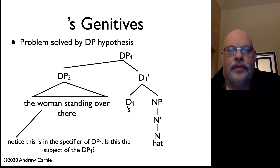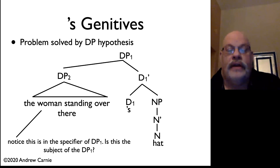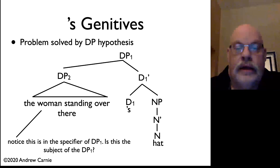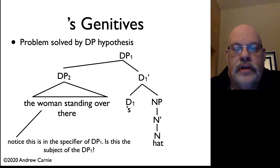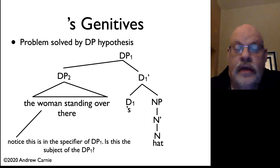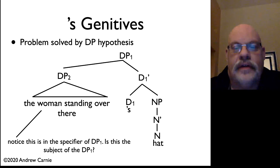One more thing to think about before we sign off on this video. Notice that we've drawn in this DP2 — the possessor DP — in the specifier of DP1. I've hinted before that we're going to use specifiers for a purpose: we're going to use specifiers as the positions of subjects. So one possibility here is to think of possessors as the subjects of DPs. Just think about that possibility.